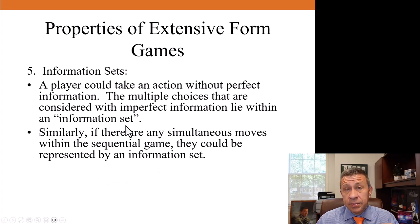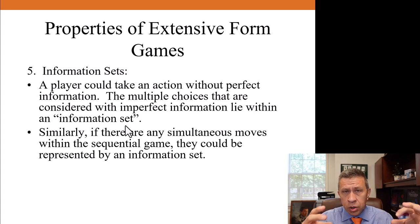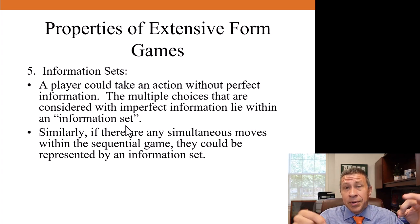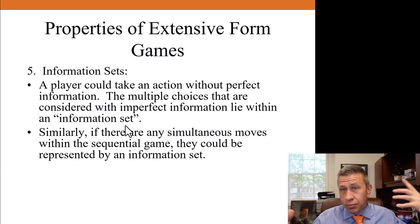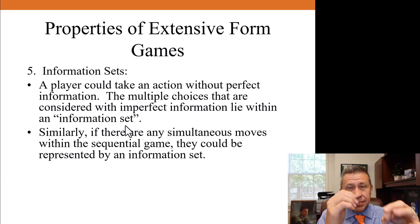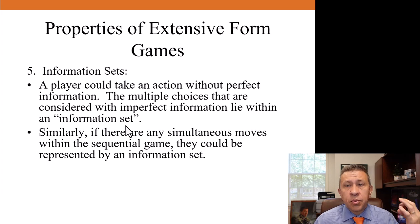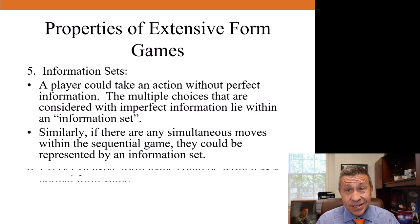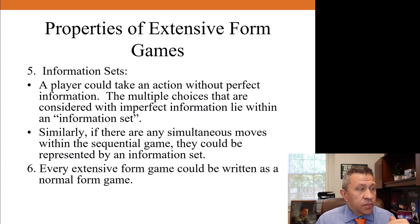Now, sometimes within games, there will be an action that's taken where a player won't have perfect information. Player will be taking an action and not know what happened before. When that happens, we would refer to that as an information set. With an information set, if a player is taking an action and they're not sure what happened before, you simply draw a circle around the various choices. We're going to show some examples soon of what this might look like. Similarly, if there are any simultaneous moves within a sequential game, which could happen, you could have a sequence of events and then something that happens at the same time. A simultaneous move within a sequential game is also denoted by an information set.